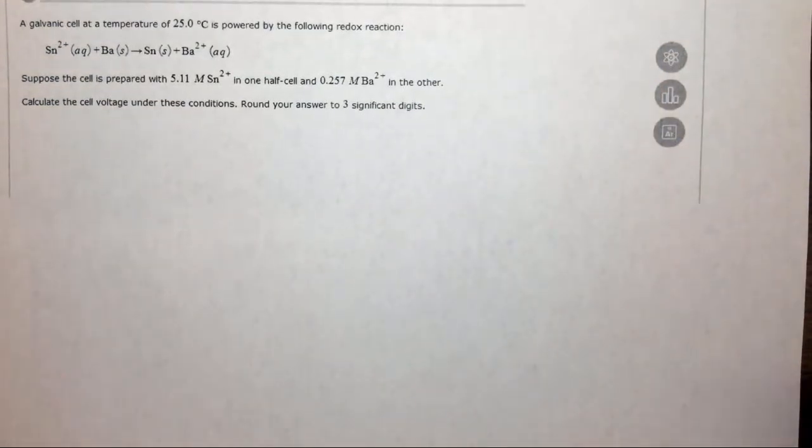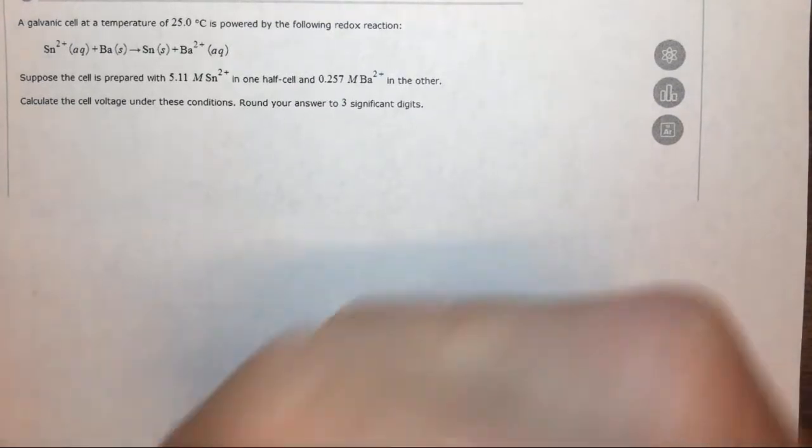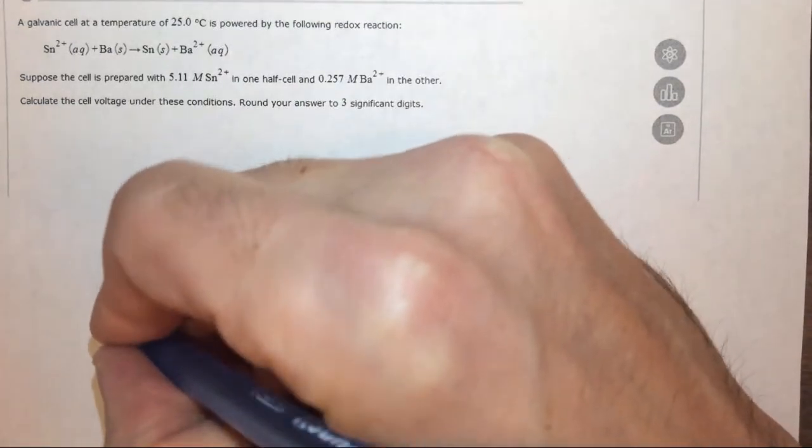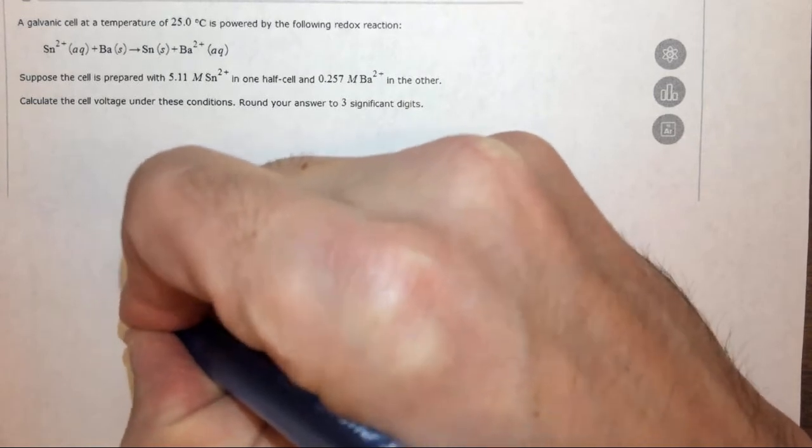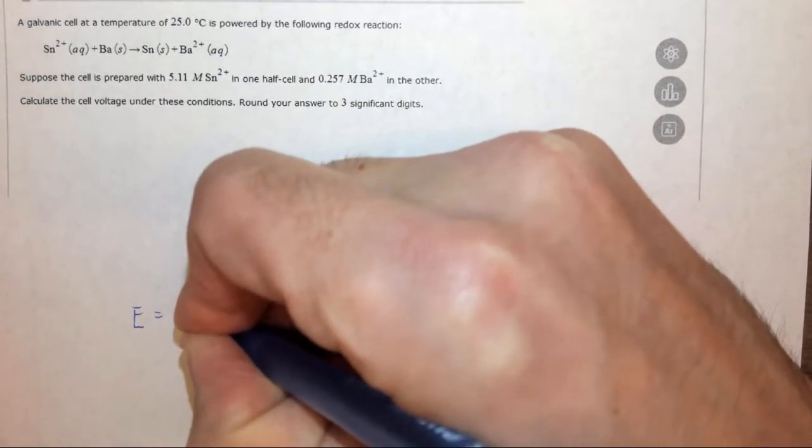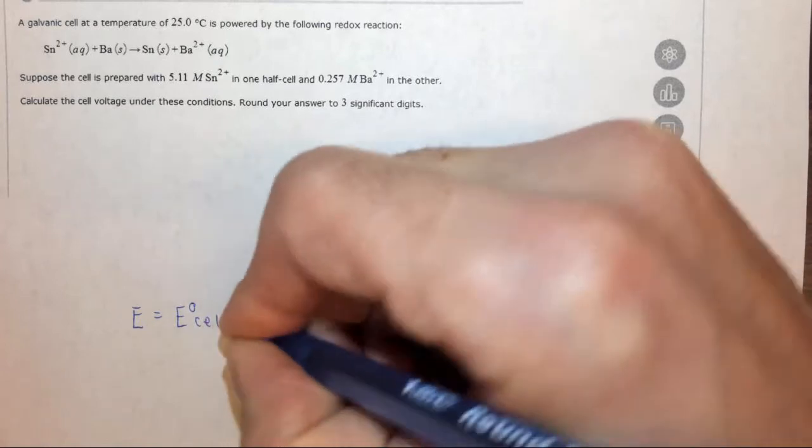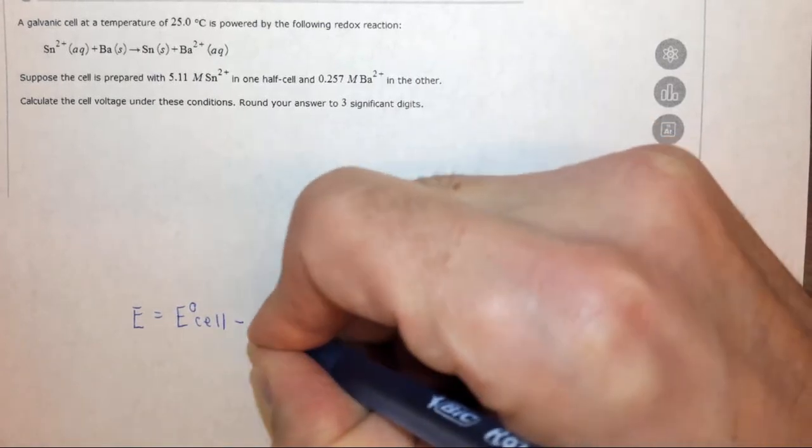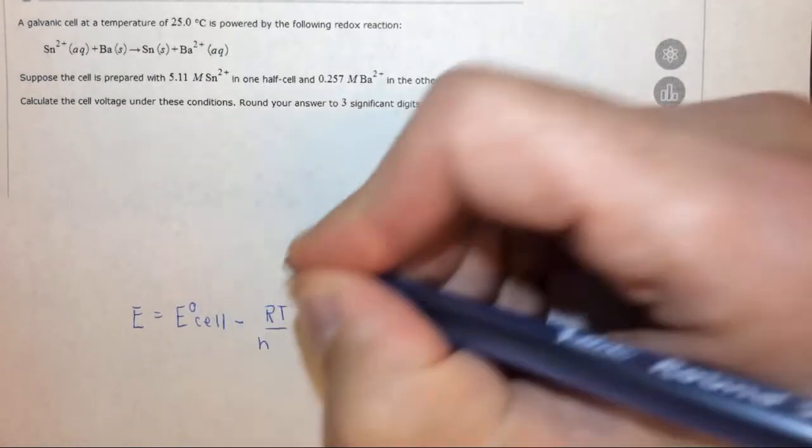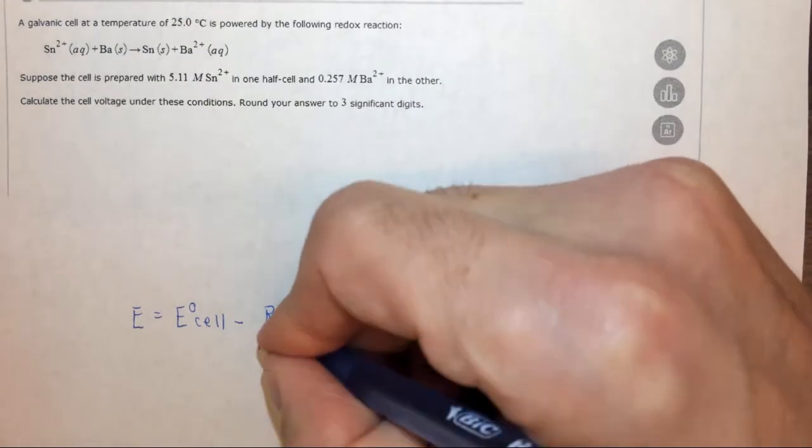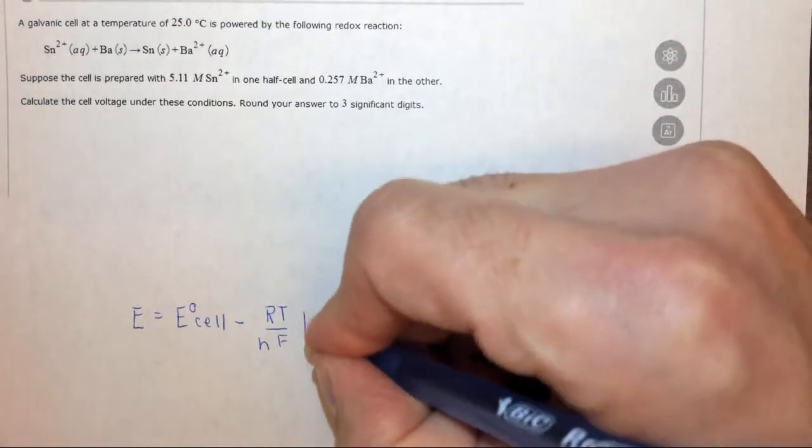So for non-standard conditions we need to use the Nernst equation, which is that E equals the standard reduction potential of the cell minus RT over n (the number of moles) times F (Faraday's constant) times ln Q.